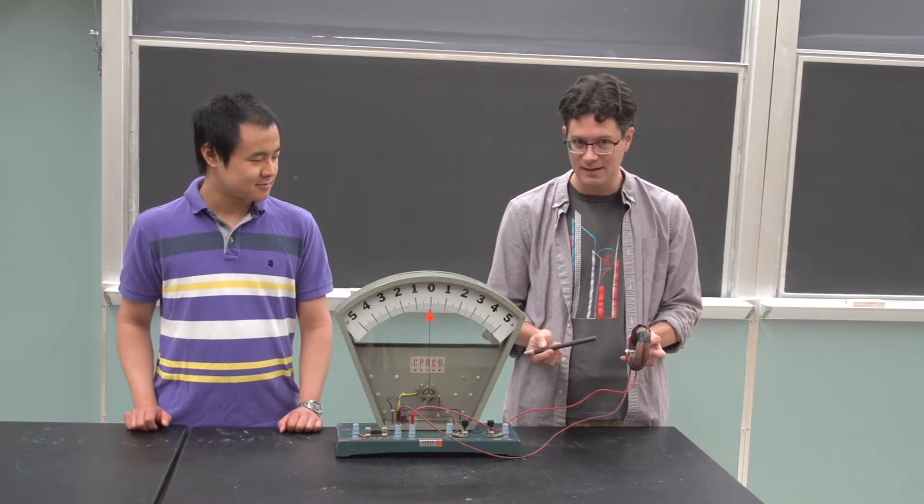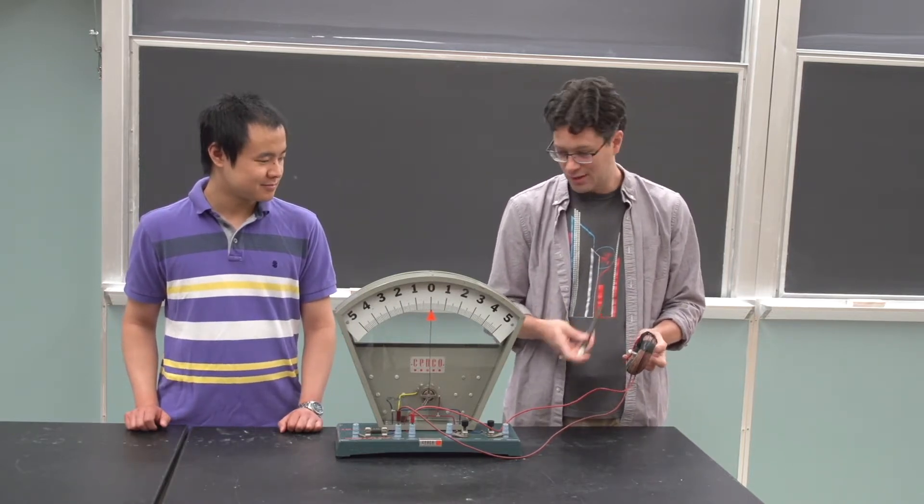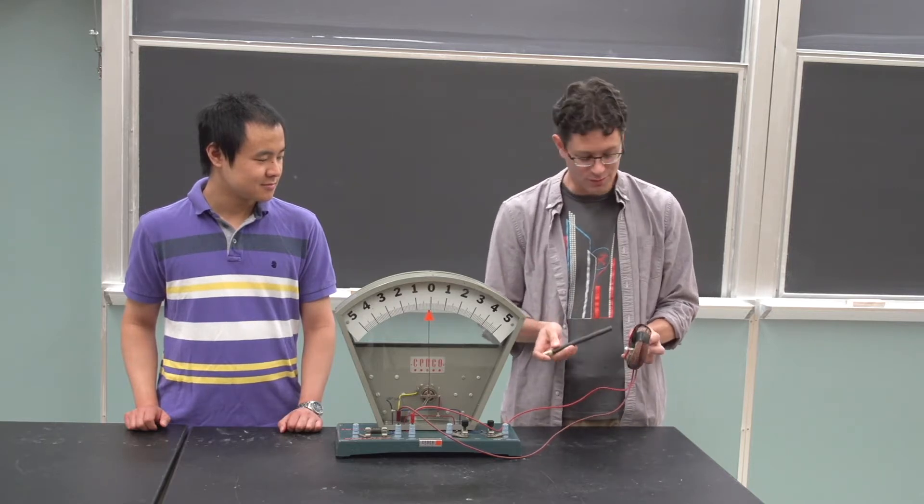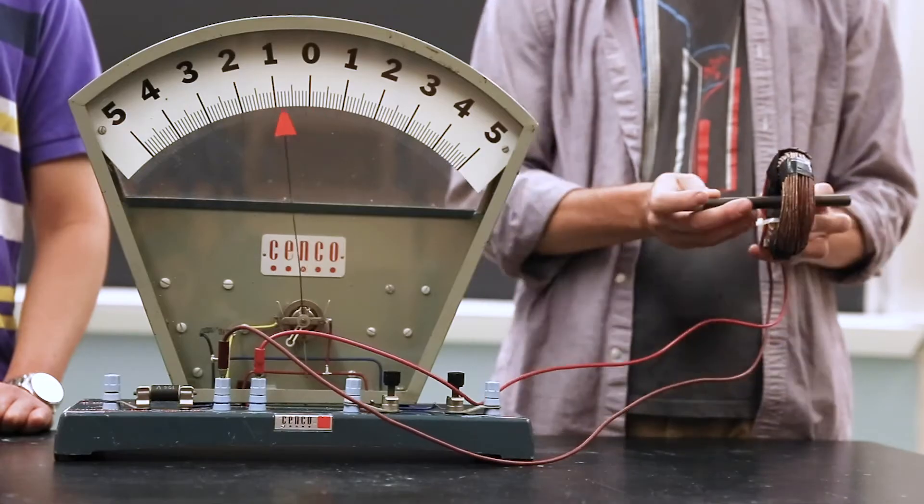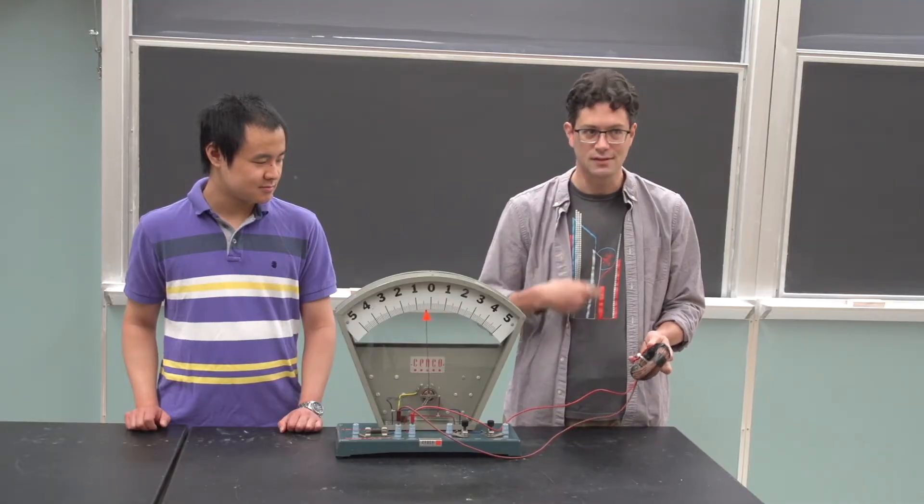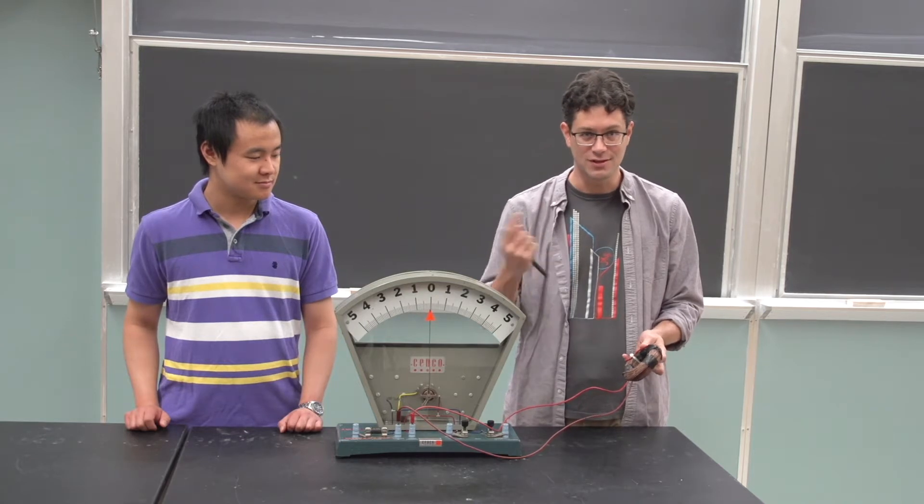And the trick is the faster you change the magnetic field, the bigger the current you're going to get. And then essentially I can have a constant power supply if I just move my magnet constantly in and out, in and out, in and out. Then this will be a constantly generated current. It will be alternating current. It will constantly change direction.